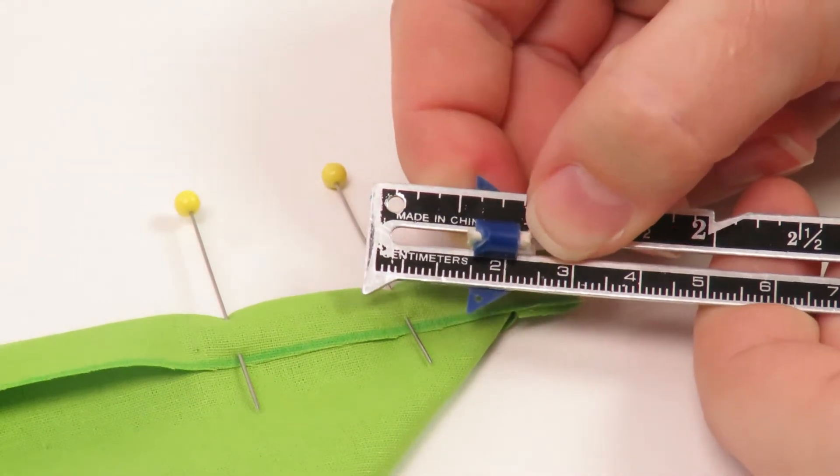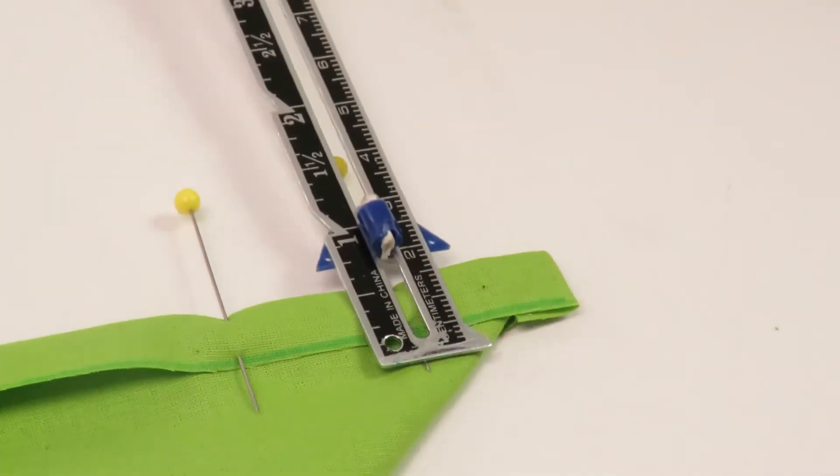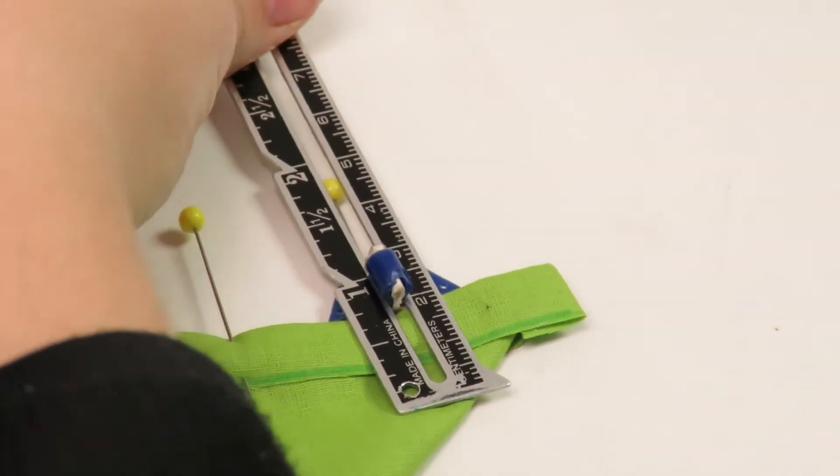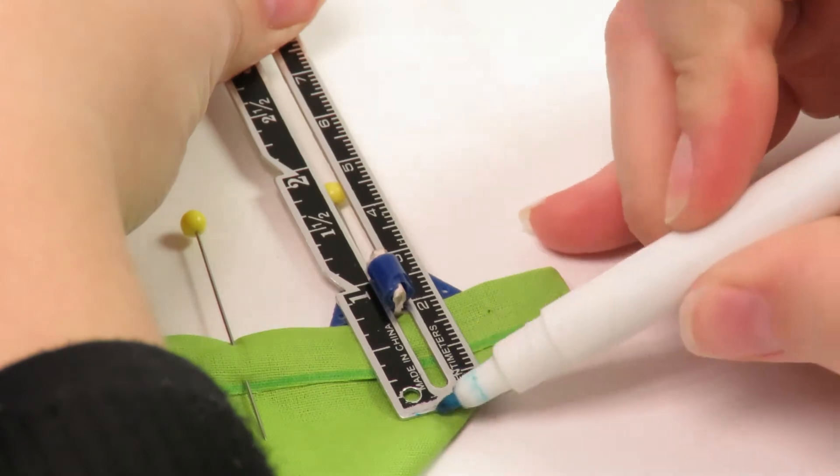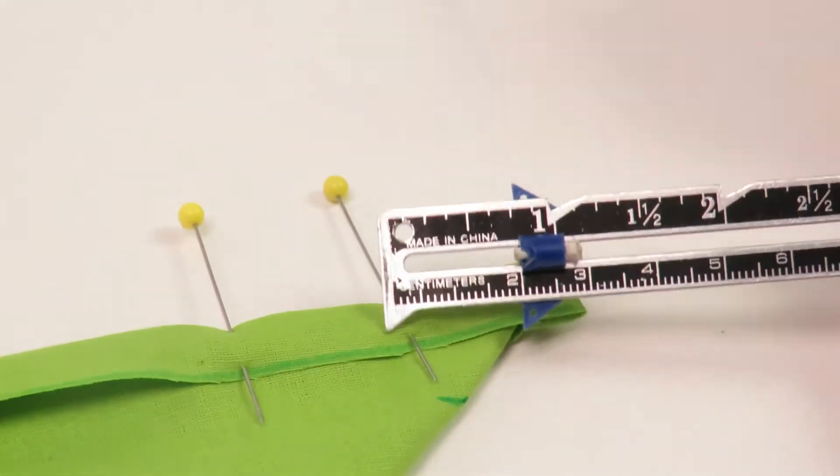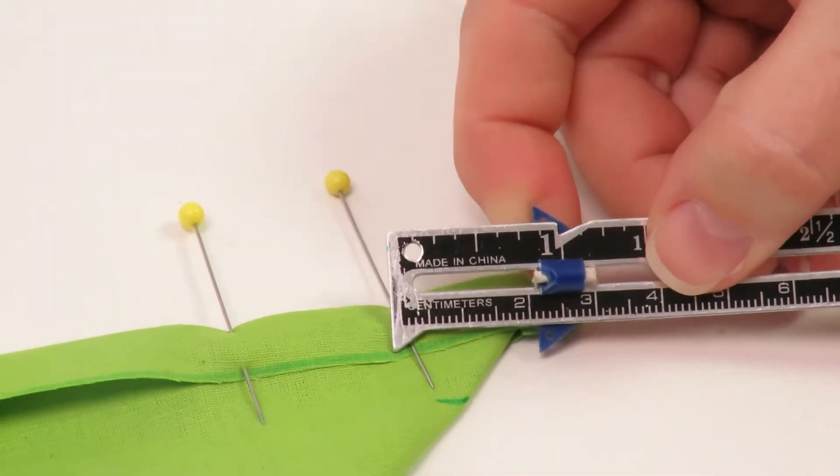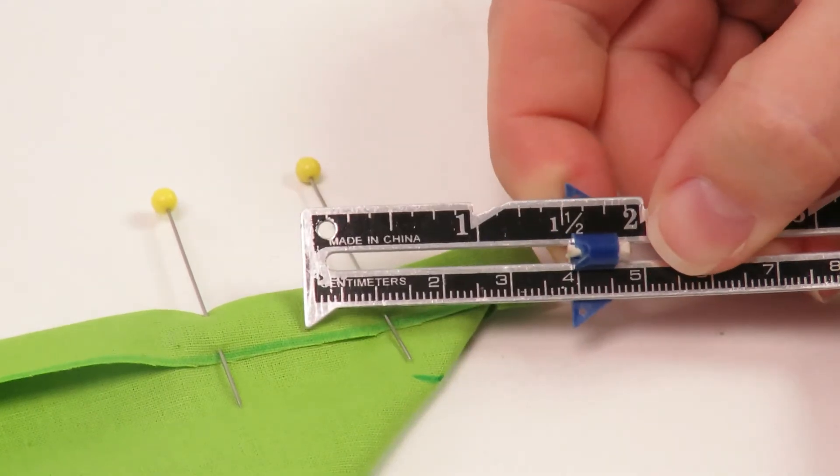Measure two centimeters down and make a mark. For the second mark, measure double the measurement of the second seam allowance.